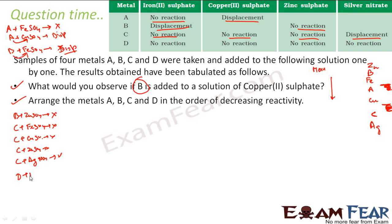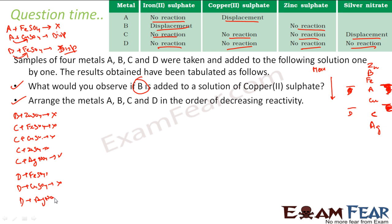D plus FeSO4 — no reaction, so D is weaker than iron. D plus copper sulfate — no reaction, so D is below copper. D plus zinc sulfate — no reaction, so D is below zinc. D plus silver nitrate — no reaction, so D is even weaker than silver. The actual position of D is below silver in the reactivity series.